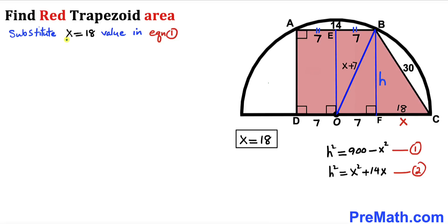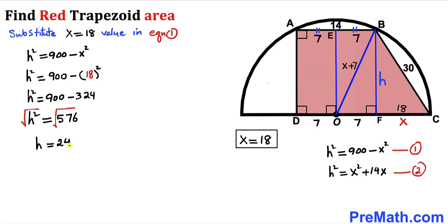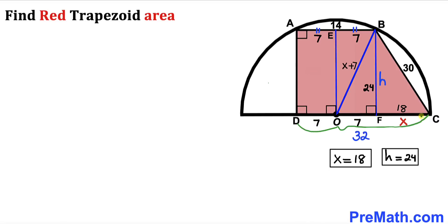Substituting X = 18 into Equation 1: h² = 900 − 18² = 900 − 324 = 576. Taking the square root, h = 24 units. So the height of the trapezoid is 24. The full base CD equals 7 + 7 + 18 = 32 units.